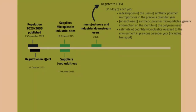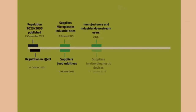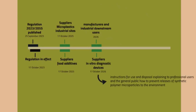If you know that a big bag of nurdles had a rupture during transport on a truck and you lost 100 kilograms of microplastics, or when a shipping container went lost at sea containing perhaps 18 or 19 tons of the material — that's something that has to be added in the registration. Suppliers for in vitro diagnostic devices will also have to give instructions for use and disposal explaining how to prevent release of synthetic polymer particles in the environment, through the safety data sheet, label, or leaflet.